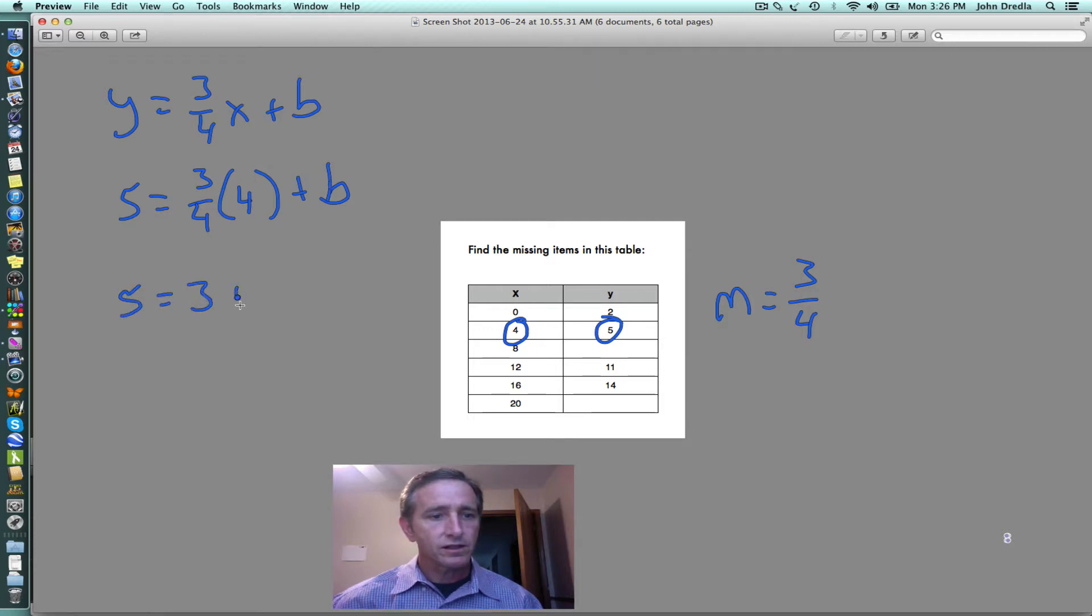Solving the equation gives me b is equal to 2. Our y-intercept is 2, and so now I have all the information I need to be able to write the equation for our line. Y is equal to 3 quarter x plus 2.